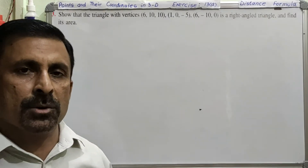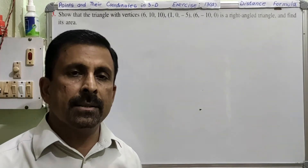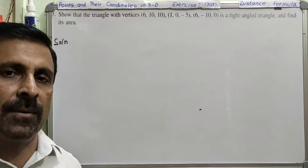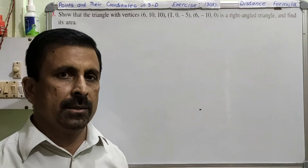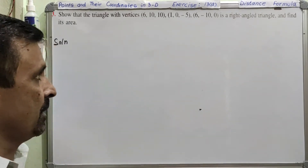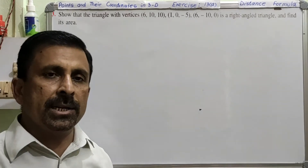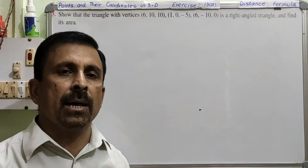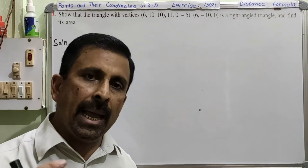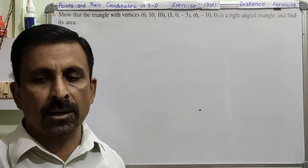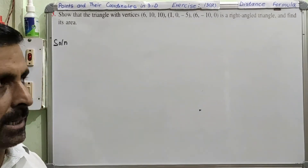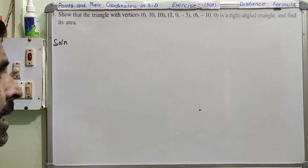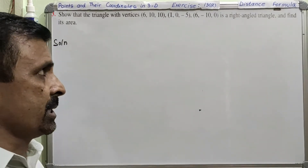Now we move on to Question 3, which is an application of the distance formula. We are going to apply the concept of the distance formula to solve a different type of question. In Question 3 we are given the coordinates of 3 points and we have to prove that these are the coordinates of a right-angled triangle, and also find the area of the triangle.